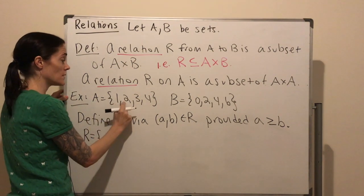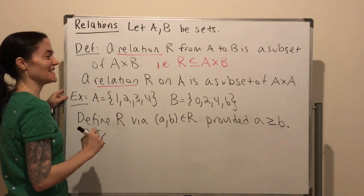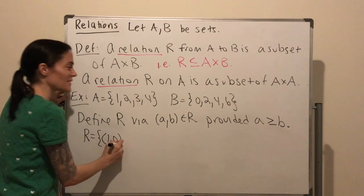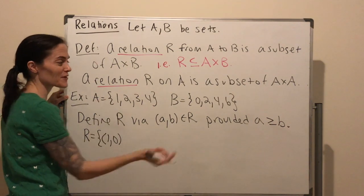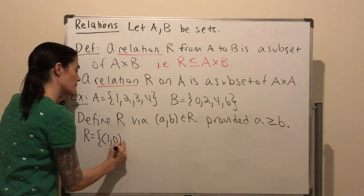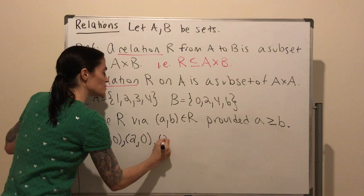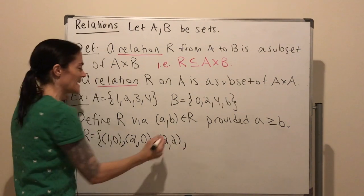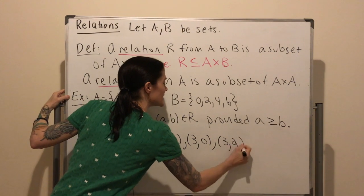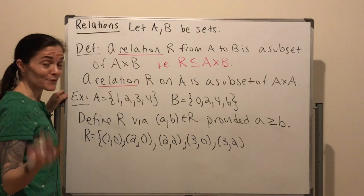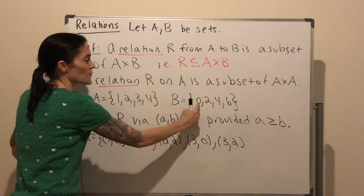We can go one by one and figure out which pairs are in it. With 1, we would have (1, 0) because I need the first coordinate to be bigger than or equal to the second. Then with 2, I have (2, 0) and (2, 2). With 3, I have (3, 0) and (3, 2) — but not (3, 4) by my definition.